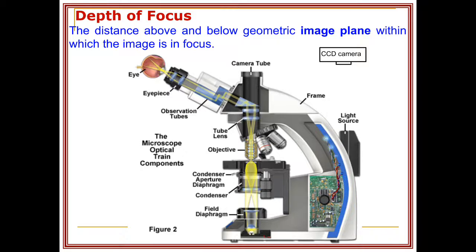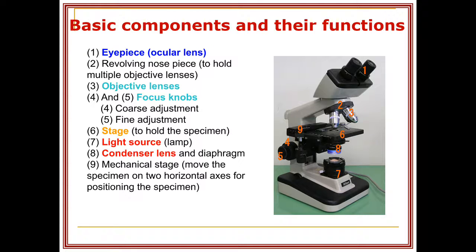In this picture you can see the various parts of the optical microscope: the eyepiece, observation tubes, objectives, condenser, diaphragm, the rotating XY orientation table, the frame, and the light source. One more concept on this slide is depth of focus — the distance above and below the geometric image plane within which the image remains in focus.